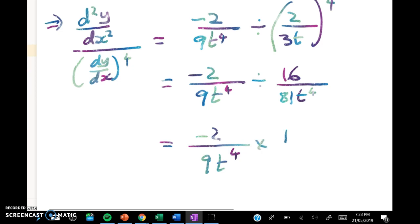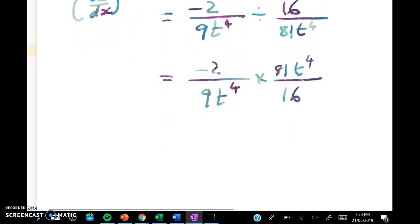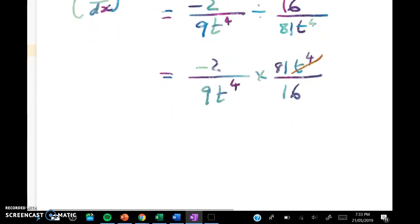So this is times 81t to the power of 4 over 16. And you can see that these t⁴ terms cancel out and these give me 9 and this gives me a common factor of 8. So I get negative 9 over 8 which is a constant as required. So we might just write that, a constant as required.